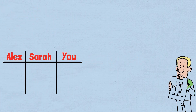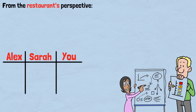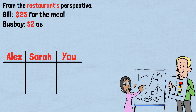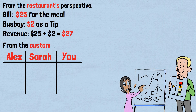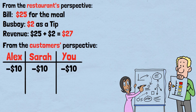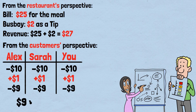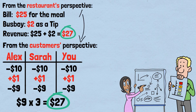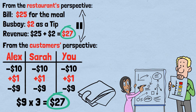Let's rebuild this problem from the ground up using proper accounting principles. From the restaurant's perspective: they received $25 for the meal, and the busboy received $2 as a tip — total revenue: $25 plus $2 equals $27. From the customer's perspective: you each paid $10 originally, got $1 back, so your effective payment was $9 each — total paid by customers: $9 times 3 equals $27. Both perspectives give us the same number: $27. The remaining $3 from the original $30 is sitting in your pockets — it's not missing, it's exactly where it should be.